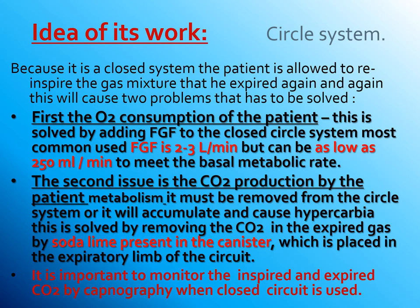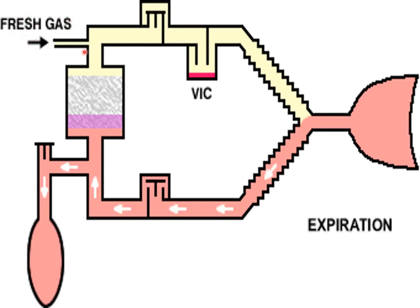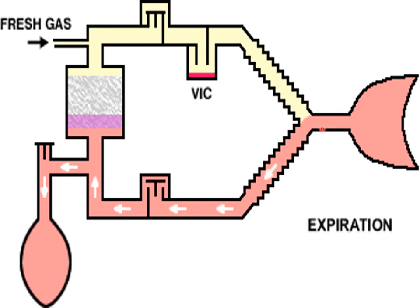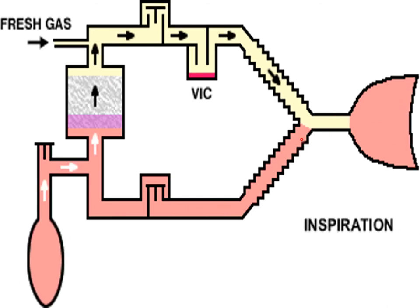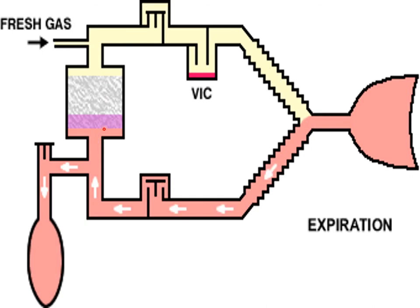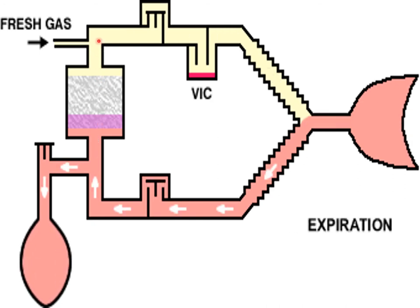It is important to monitor inspired and expired carbon dioxide by capnography when a closed circuit is used. This diagram shows the principal work of the closed system. Fresh gas flows through the corrugated inspiratory tube to the patient. The patient produces carbon dioxide in the expired air, shown in pink, which flows unidirectionally to the soda lime canister where carbon dioxide is extracted, and that gas is pushed through to the inspiratory limb of the circle.